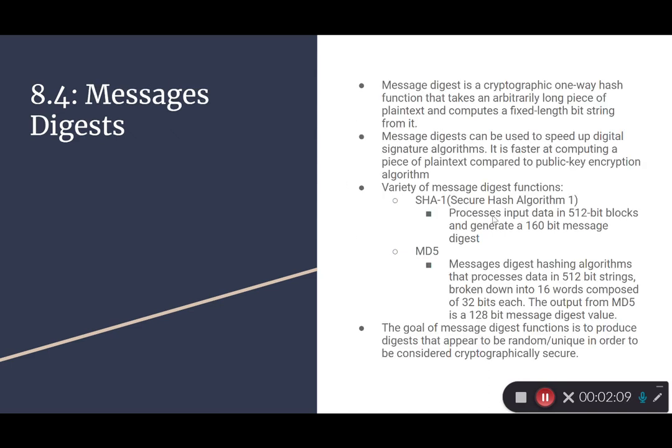Message Digest is a cryptographic one-way hash function that takes an arbitrarily long piece of plain text and computes a fixed-length bit string from it. Message Digest can be used to speed up digital signature algorithms. It is faster at computing a piece of plain text compared to a public key encryption algorithm.